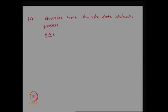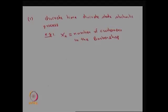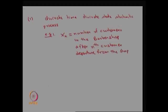Let us see one simple example. Let us create a random variable X suffix n as nothing but the number of customers in the barber shop after the nth customer's departure from the shop. Here suffix n forms the parameter space, therefore capital T represents the possible values of n — that means whenever one customer leaves the system, how many are in the system after he leaves.